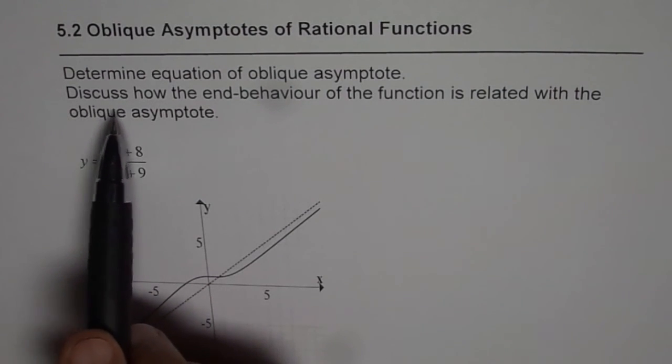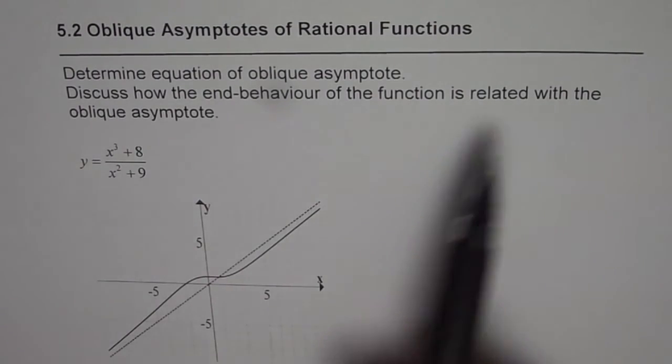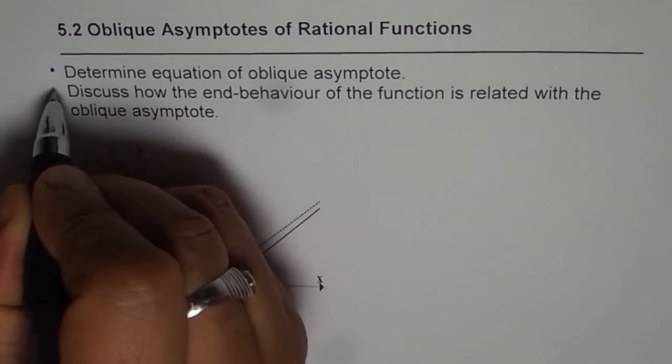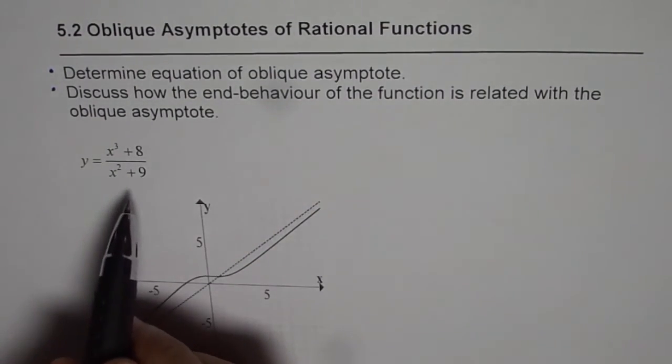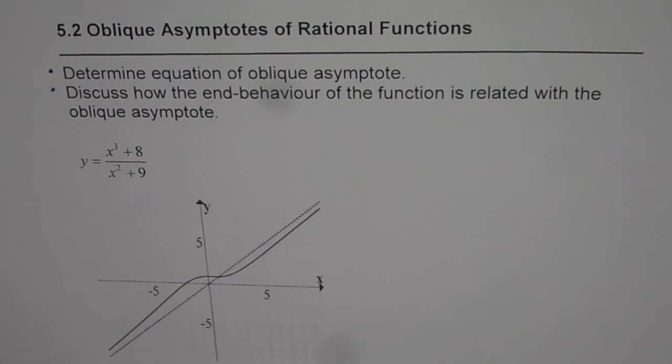And the second part of this question is, discuss how the end behavior of the function is related with the oblique asymptote. There are two parts to this. The function which we are going to work with is x cubed plus 8 divided by x squared plus 9.